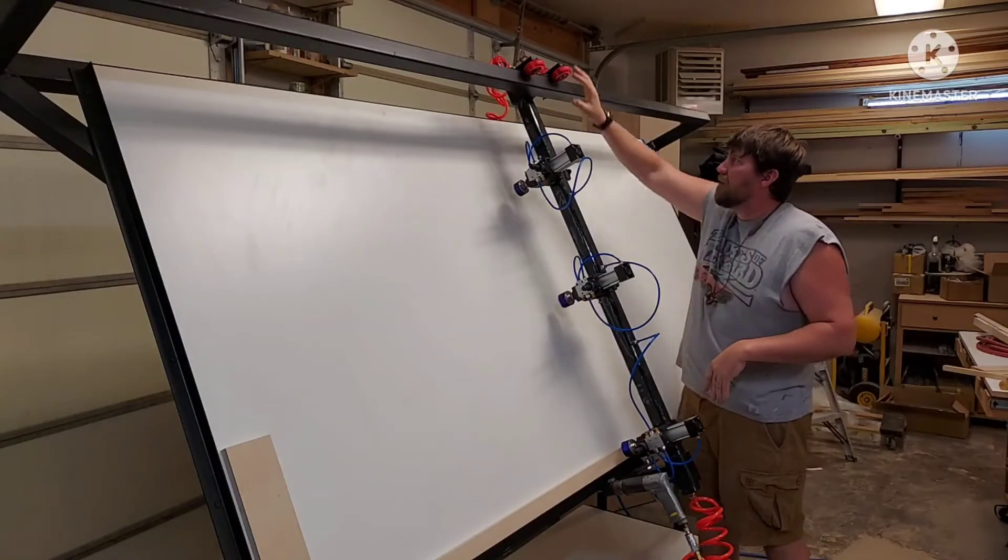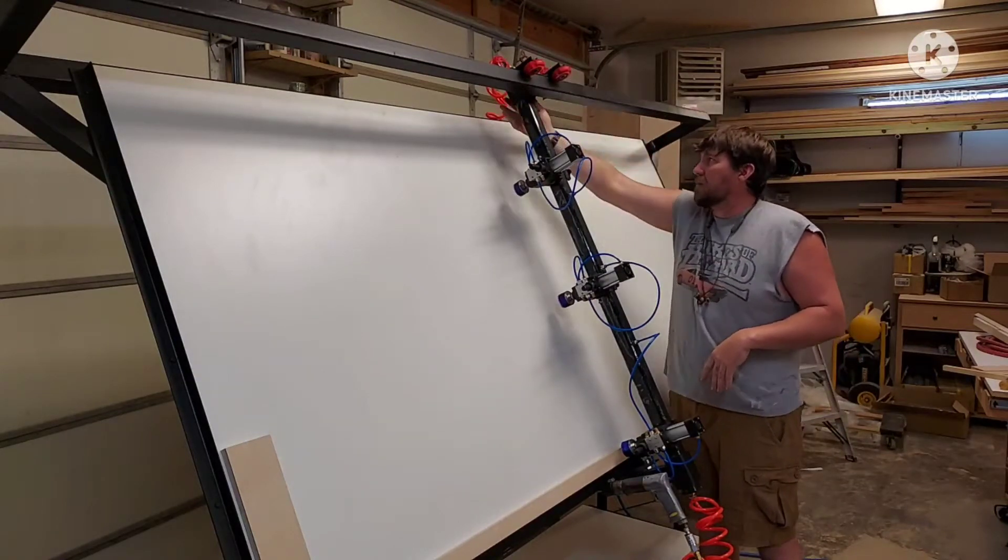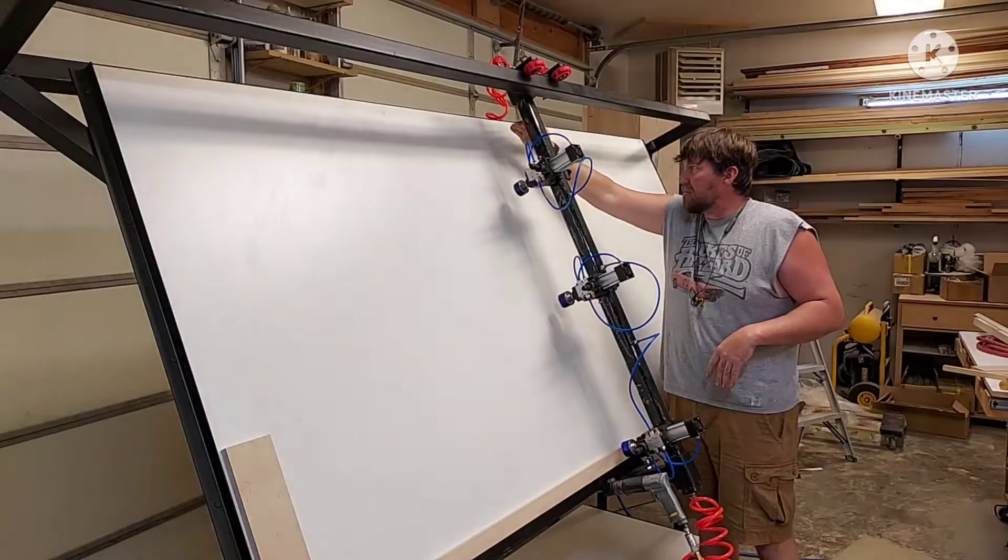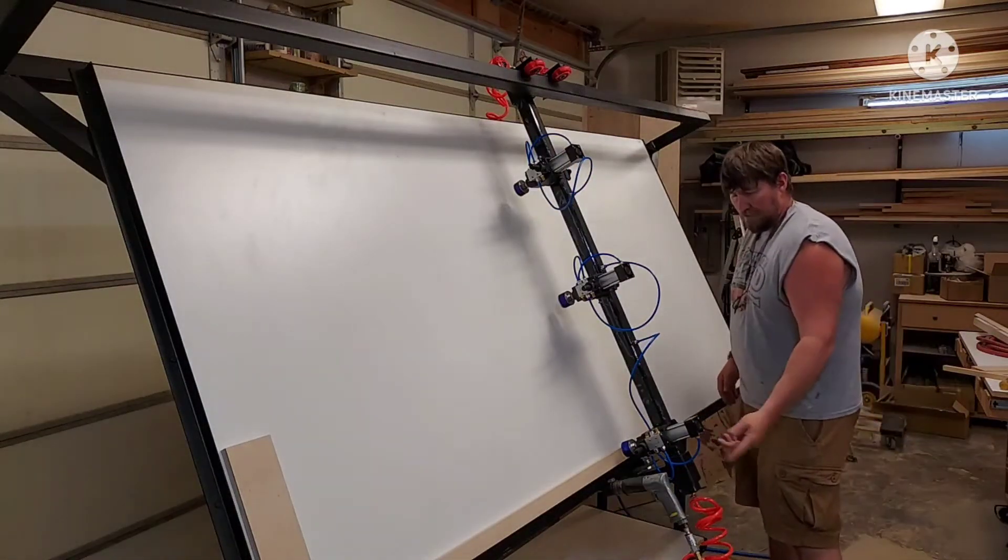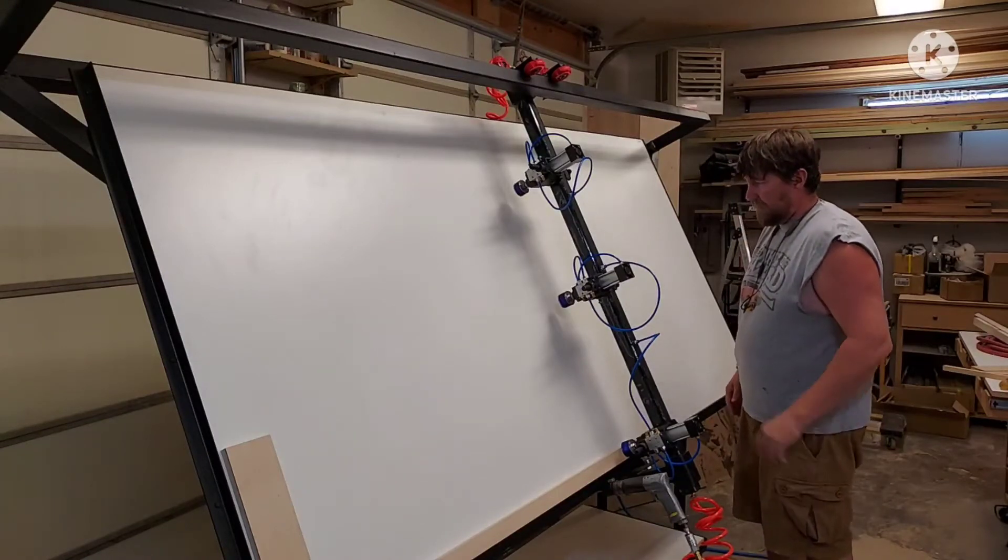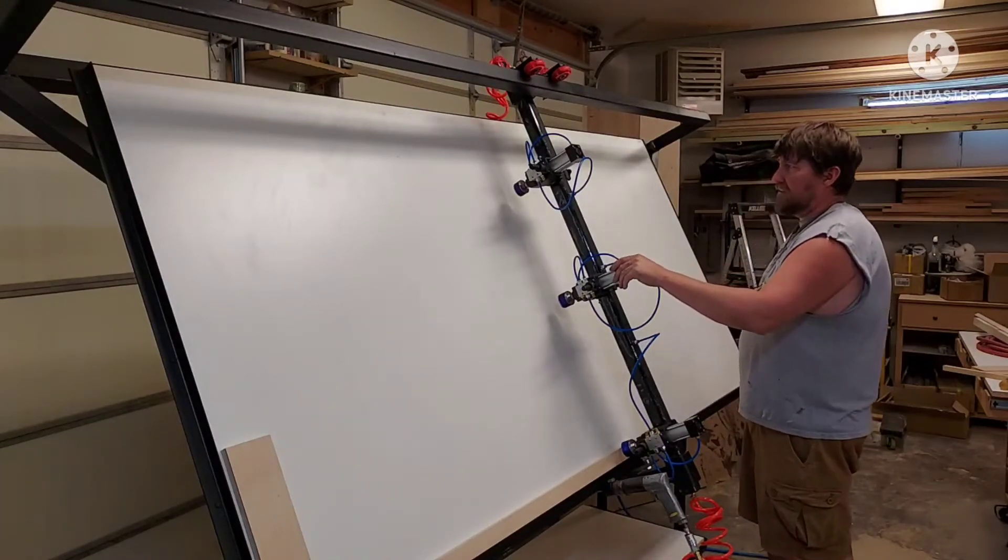Once we had this thing figured out and how we were going to mount it, then we just had to take a measurement here and make sure this arm was going to be up the same amount, and that told us where to weld that. That was pretty simple.